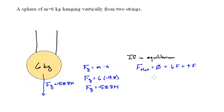I'm going to expand this out and say that zero equals negative 58.8 plus the force from string one and the force from string two.